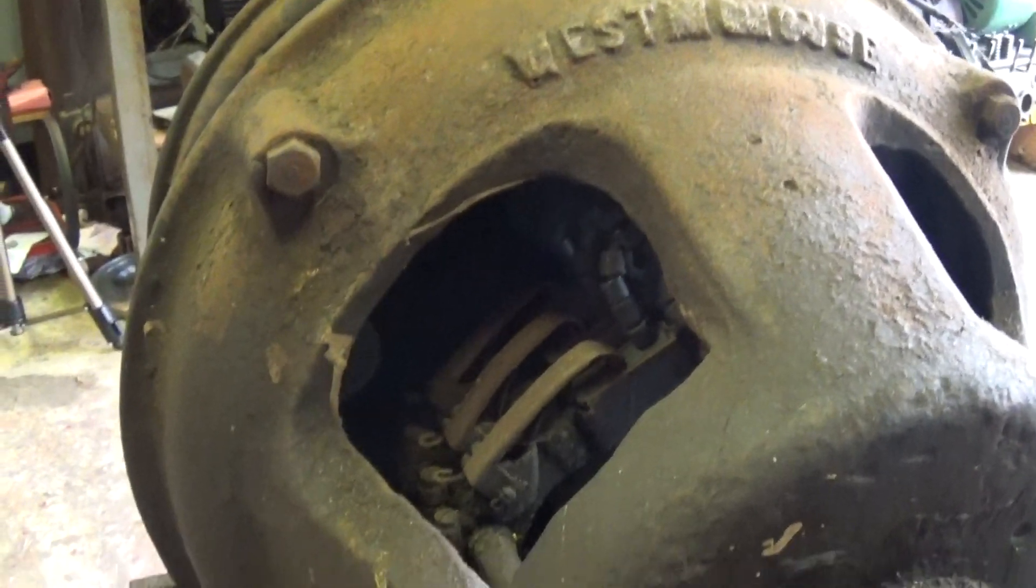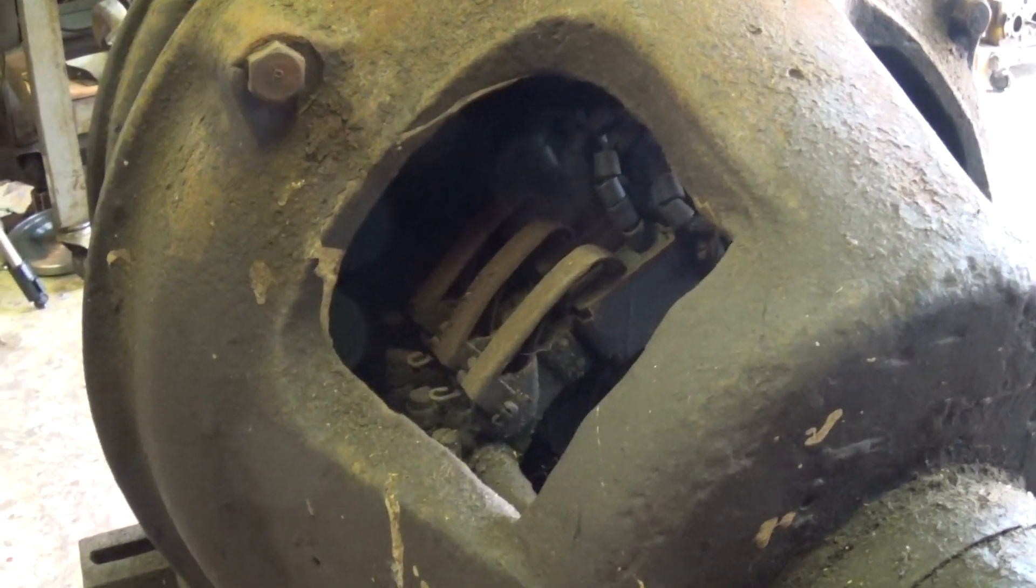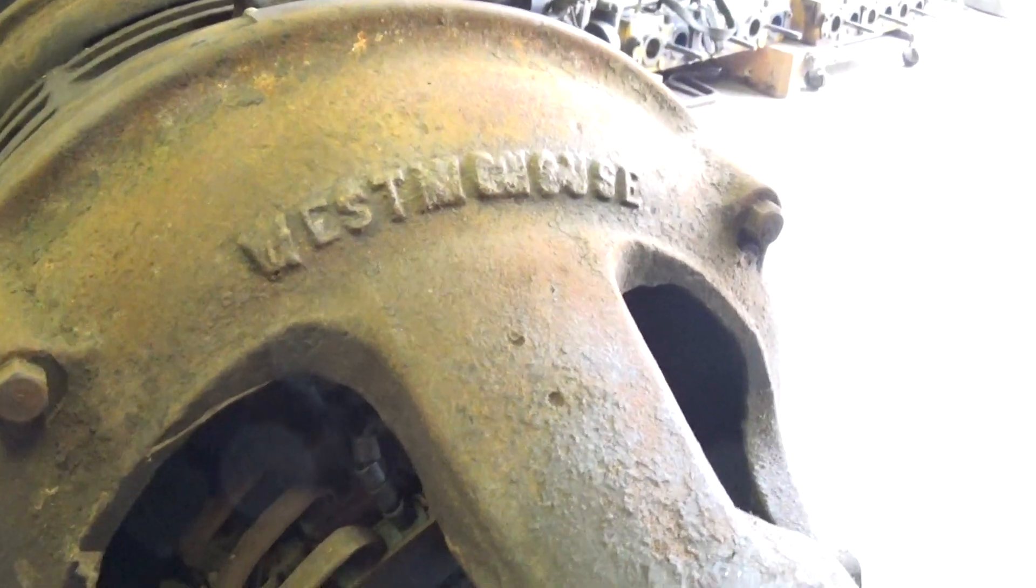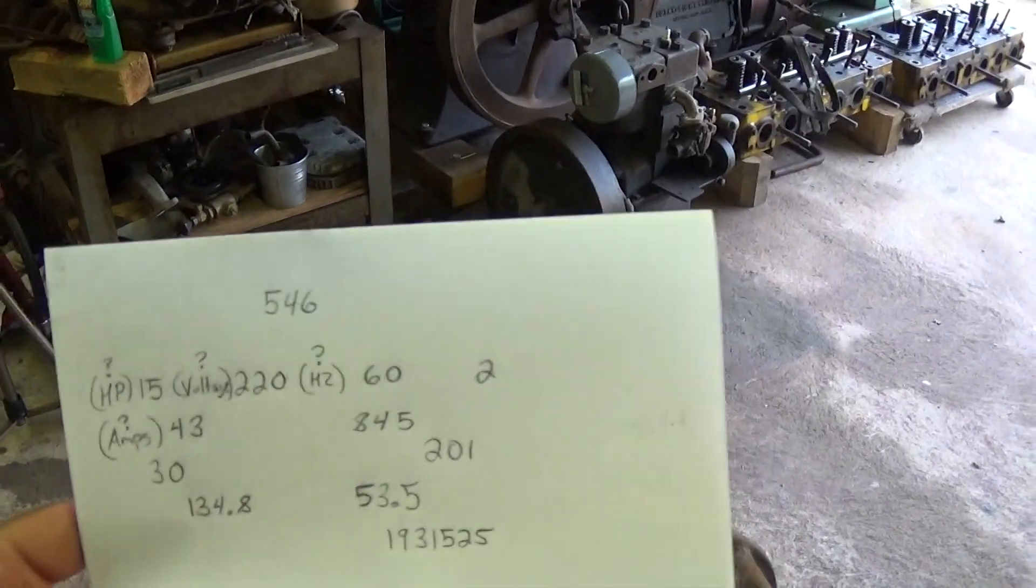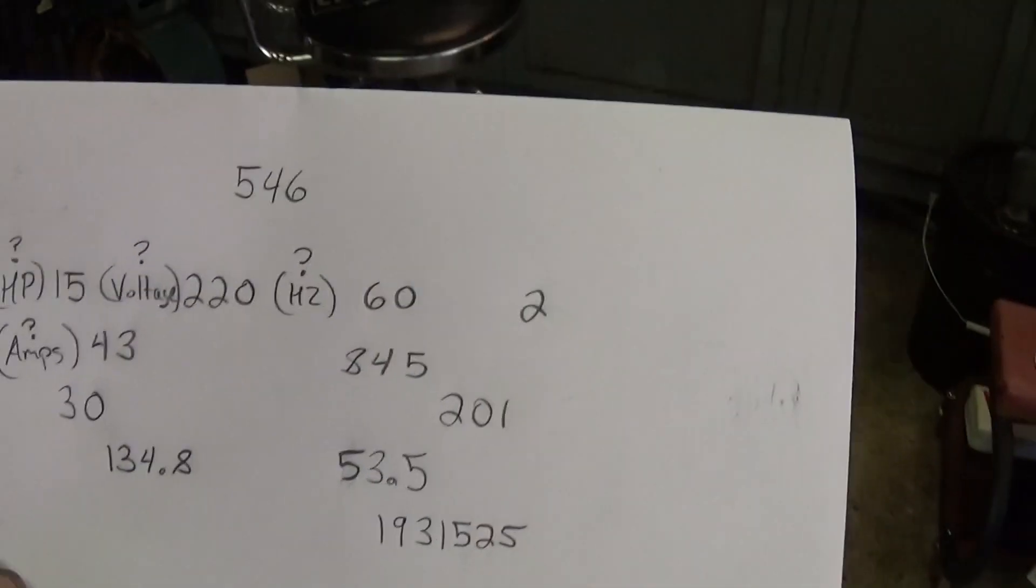So really when it was under a load, when you varied the amount of slip, the shaft RPM would change. So I've got the numbers jotted down here that I could read off of the data plate. Let me just set this down over here.